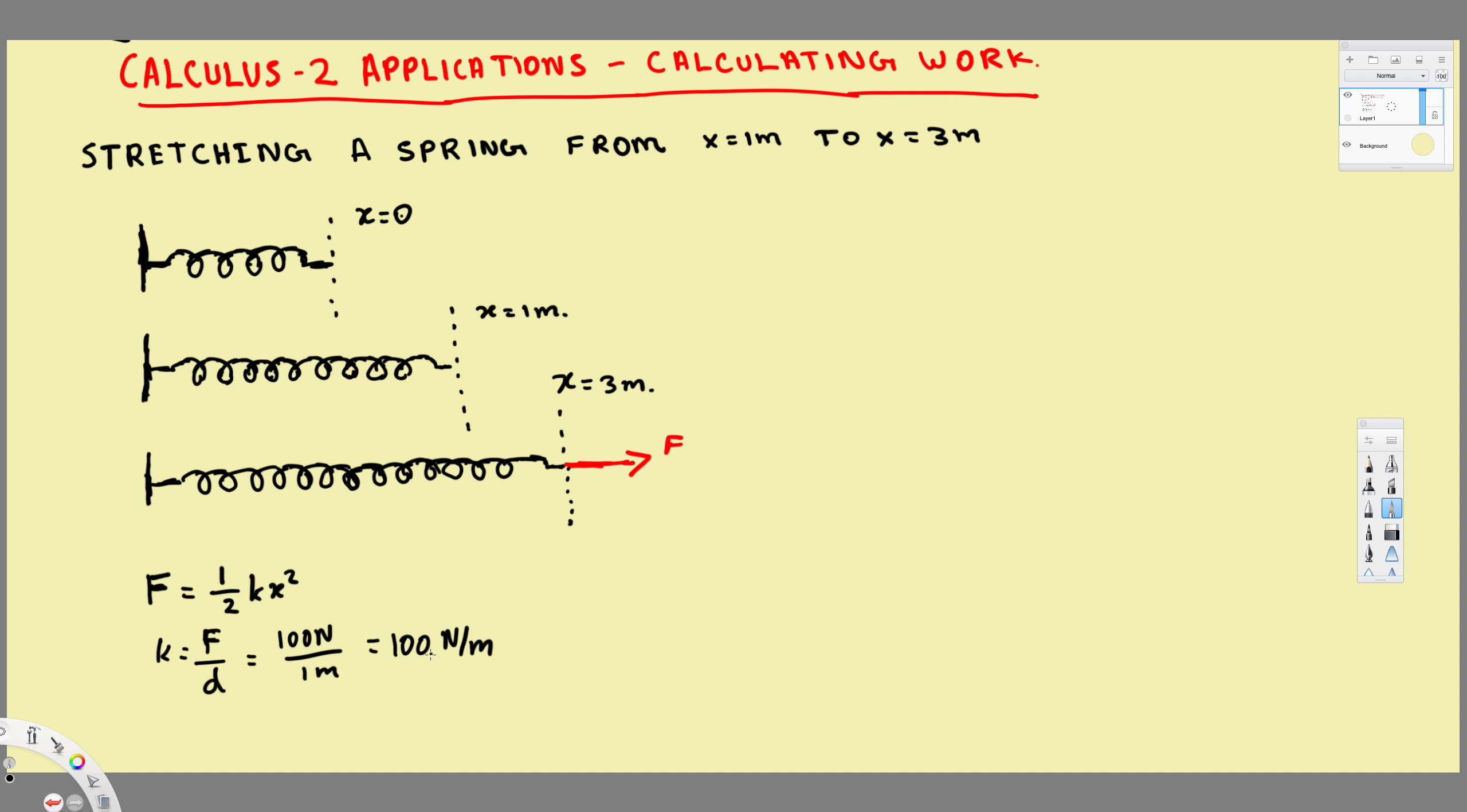We have all this information. Let's see how we can find the work. To find the work, we're going to use this equation: W equals integral from a to b of F dx. Here the limits of integration are going to be one to three. That's what we're trying to find.